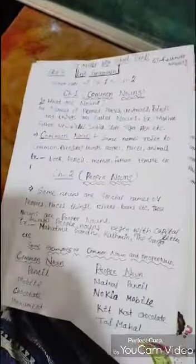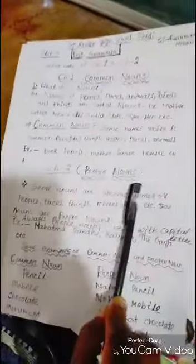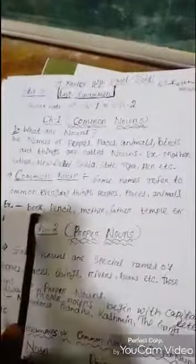Common Nouns. Among these nouns, some nouns are usually everyday usable nouns, like book, pencil, mother, father, temple, etc. Some names refer to common or everyday things or people's places or animals are called Common Nouns. Example, I have written here, you can read it.